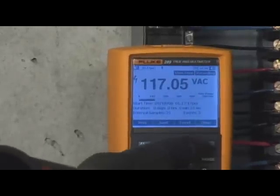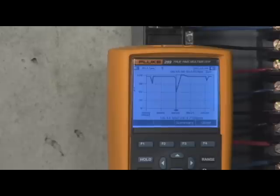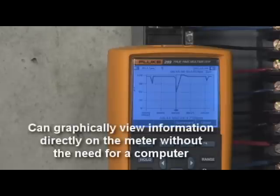The Fluke 280 series digital multimeter has the ability to graphically review information on the meter immediately after the recording session is completed.